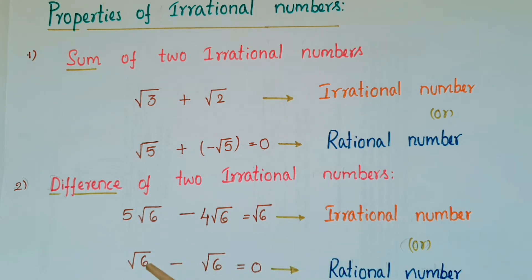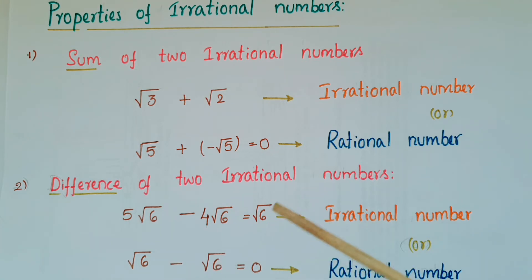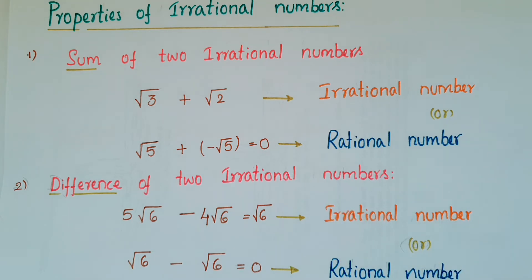Second property: difference of two irrational numbers. If we take root 6 minus root 6, we get 0, which is a rational number. So the difference of two irrational numbers also need not be an irrational number.